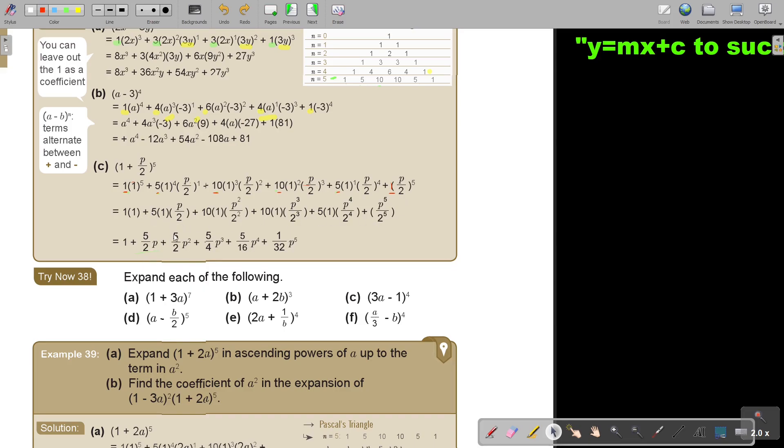And if I simplify this, then I simplify. This is 10 over 4, which can become 5 over 2. This is 10 over 8, which can become 5 over 4. And this is 5 over 16. This is 1 over 32. And then this is my final answer.